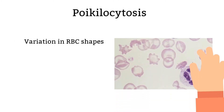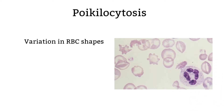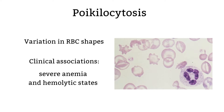Poikilocytosis. Poikilocytosis is a general term used to describe many different variations in shape. It is normal to have size variations, but if you see it all over the place, then that is when it becomes an issue because it could be a result of severe anemia.